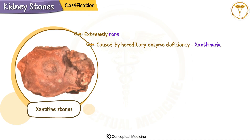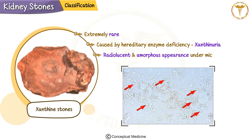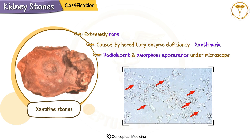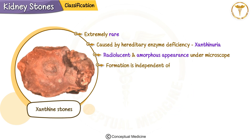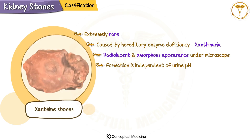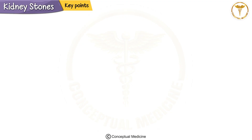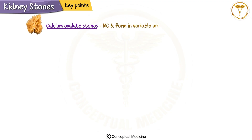Lastly, xanthine stones are extremely rare, caused by a hereditary enzyme deficiency called xanthinuria. These stones are radiolucent and have an amorphous appearance under the microscope. Unlike other stones, their formation is independent of urine pH.